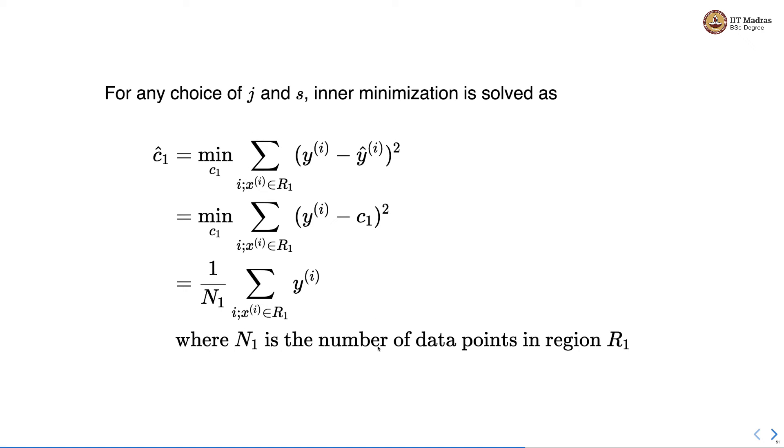Here n1 is number of data points in region R1. So in short what we are saying is we are setting c1 to the average value of the output label in that region.